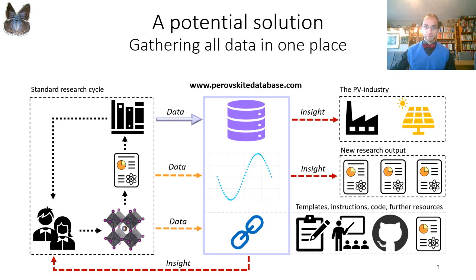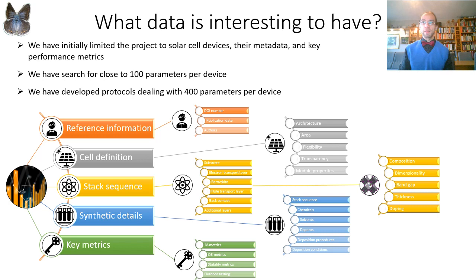First, I need to say a few words about the data, like specifying what data I am talking about. Ideally we would like to have everything, but we also have to start somewhere. In the initial project we have limited ourselves to device data, device metadata, and key performance metrics. Those parameters could be divided as shown in the figure here. We have reference information, we have cell definition like what is the cell architecture, how big is it, is it semi-transparent, is it flexible, is it a module, and so on. Then we have the device stack where we have all the functional layers in the stack like the hole transport layers, the perovskite, the electron conductors, and so on.